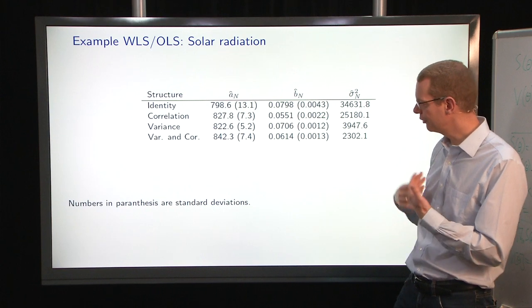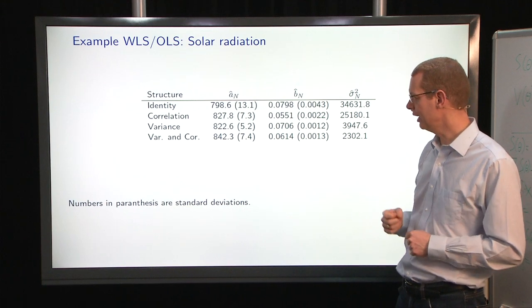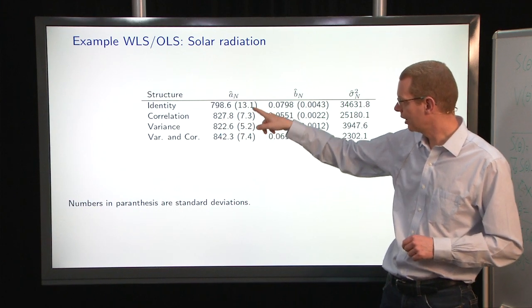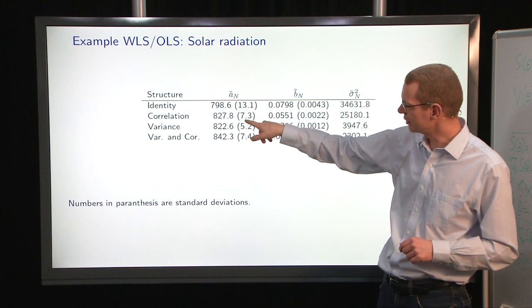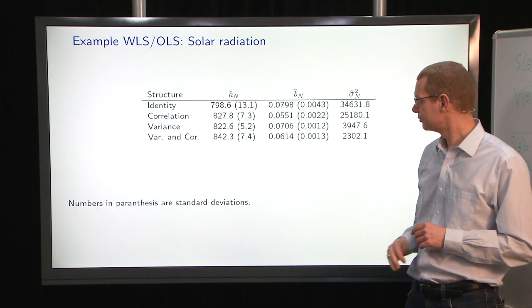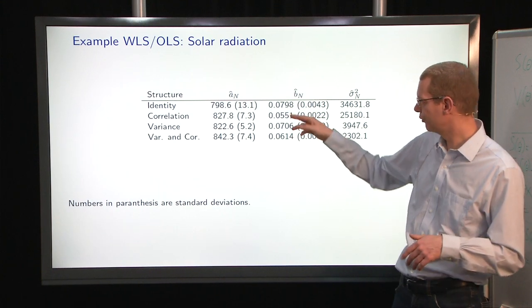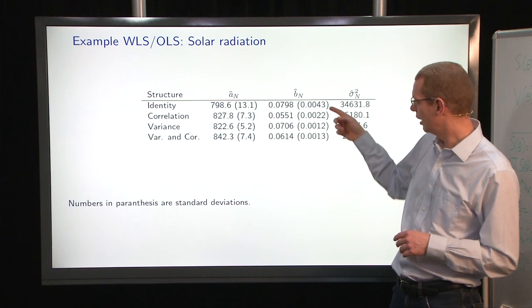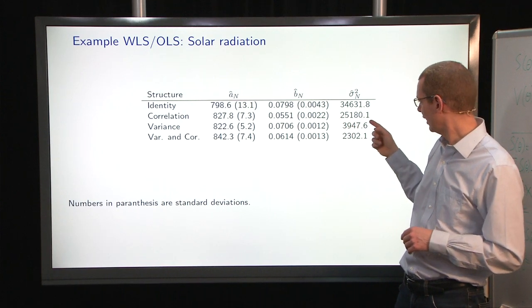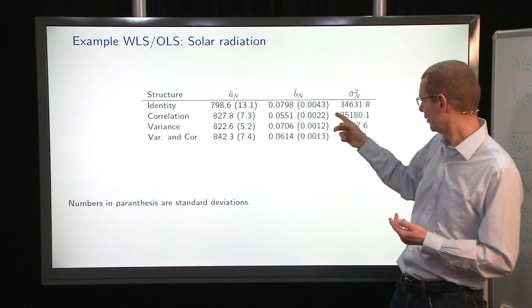Using the identity matrix as our covariance structure, then we get a fairly low level, and we get a value for the slope here, and we get a fairly large estimate of the uncertainty. If we then introduce the correlation structure, where you say that measurements within the same day have some correlation, then we increase the estimate of the level and the variance of that. The standard deviation of the estimated parameter is reduced quite a bit. And the estimate of the slope is also quite a bit different from the initial estimate. And again, we're halving the standard deviation of that, and the estimate of the variance is also quite a bit smaller for the residuals.